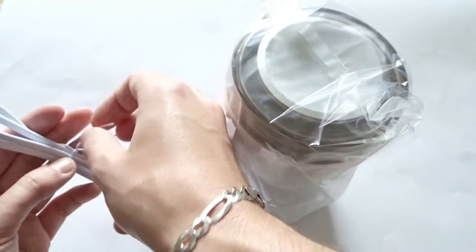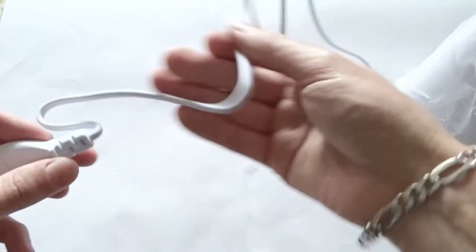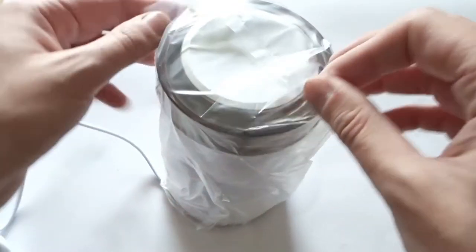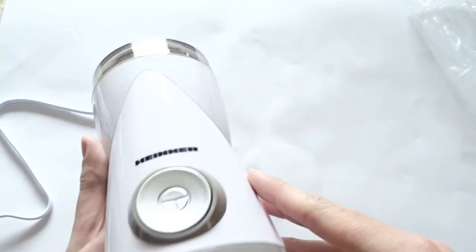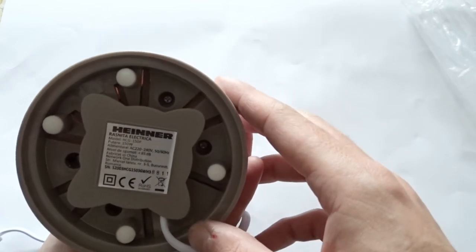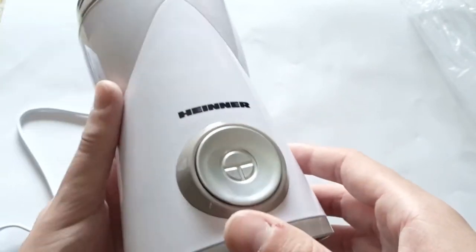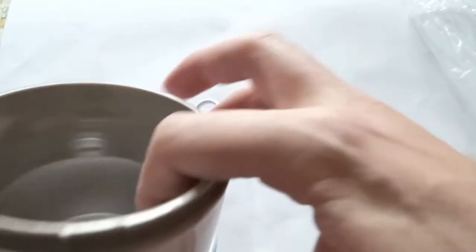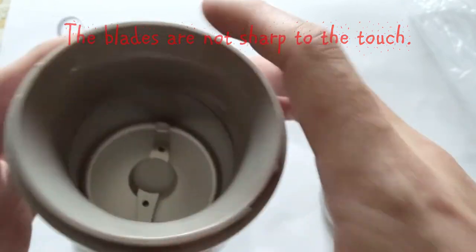The cable is about 1 meter long and you can wrap it around the base. The instructions say that you cannot clean the grinder by grinding rice because it will damage the knives. But they didn't write how to clean it. Obviously you can't put it in the dishwasher or wash it under running water.